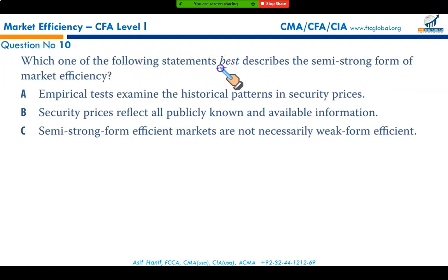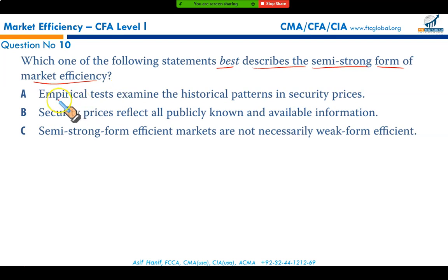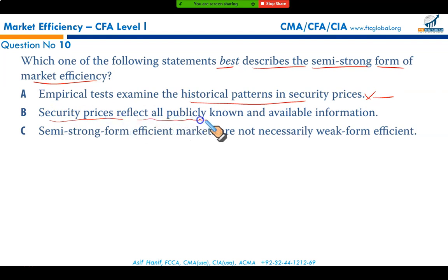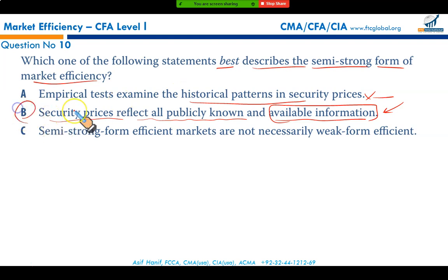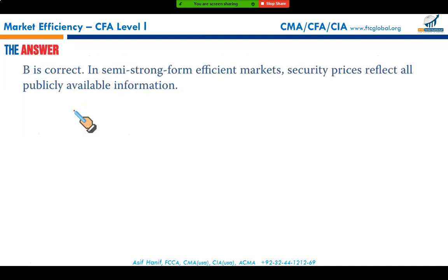Question 10 asks which statement best describes semi-strong form market efficiency. Semi-strong means public information and past volume and price data are reflected in the share price. Empirical tests that examine historical patterns in security prices describe weak form efficiency. Semi-strong form means security prices reflect all publicly known and available information, making option B the correct answer.